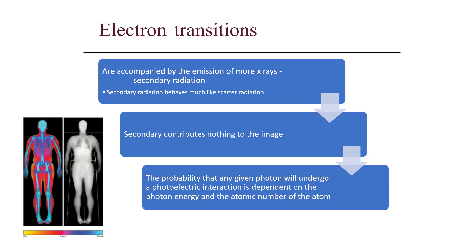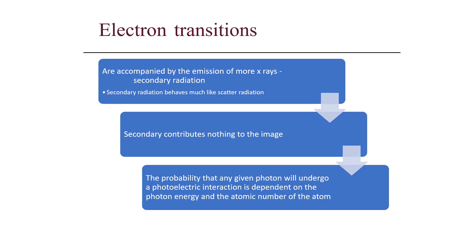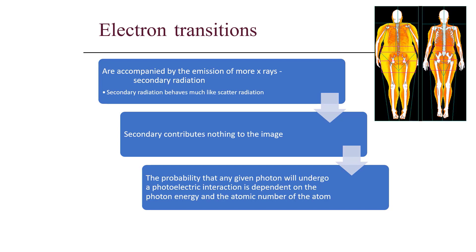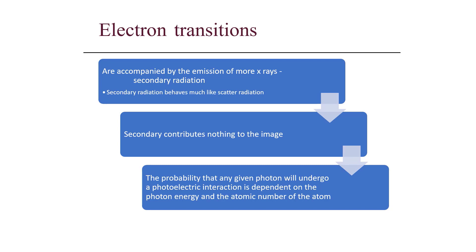In addition to absorption through thickness, we're also going through different densities of tissue — from bone to fat to water — and each of those has a corresponding different atomic number. As the photons interact with the tissue, they are being absorbed, scattered, or partially absorbed. The majority will be totally absorbed, and there will be only less than 1% of the photons transmitted through the patient to create the remnant radiation, which is what we use to make our image.